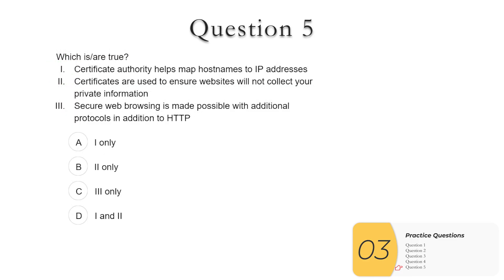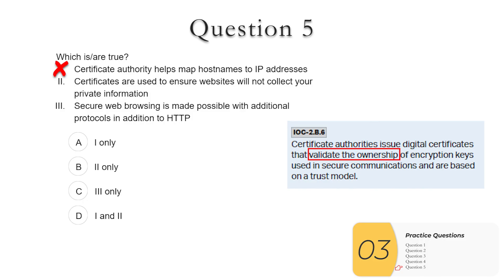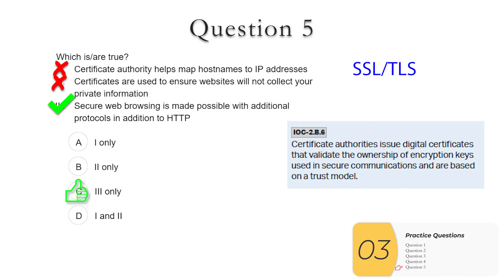Question five: which of these are true? One: 'certificate authority helps map host names to IP addresses' — that is DNS, which won't be on the exam. The certificate authority just verifies you are who you say you are — not true here. Two: 'certificates are used to ensure websites will not collect your private information' — definitely not true. Facebook and Meta are the worst offenders in terms of collecting private information, but they are verified as who they say they are. Just because you are who you say you are doesn't mean you can't be terrible. Three: 'secure web browsing is made possible with additional protocols in addition to HTTP' — if you saw the Code.org video, you know this is true. SSL and TLS make secure web browsing possible. By default, the web is not secure. So the answer is C — three only.